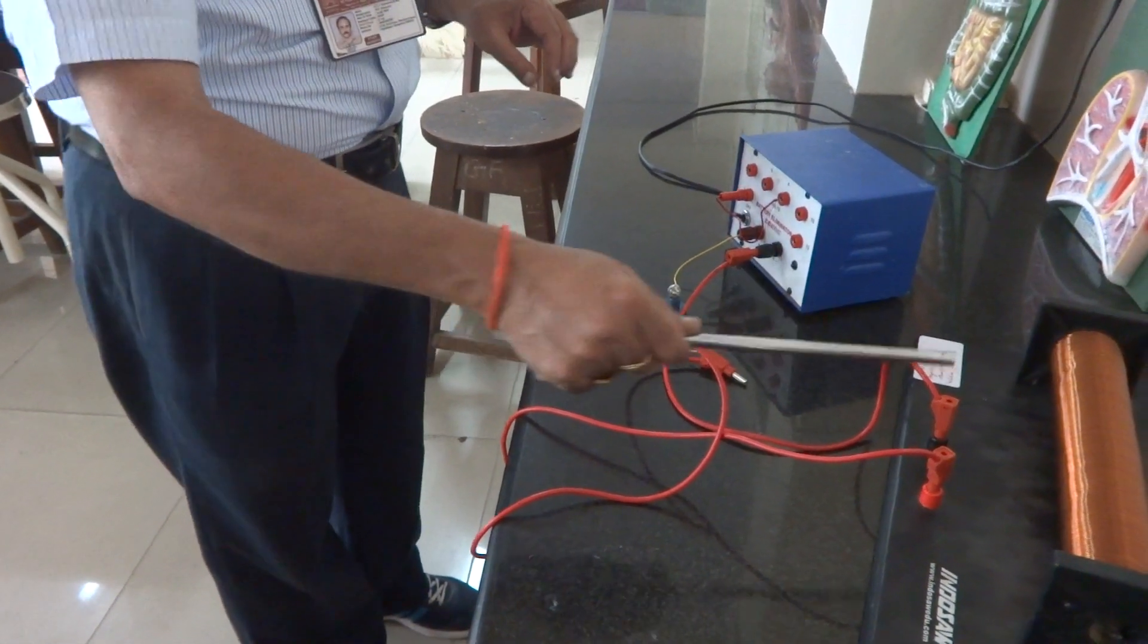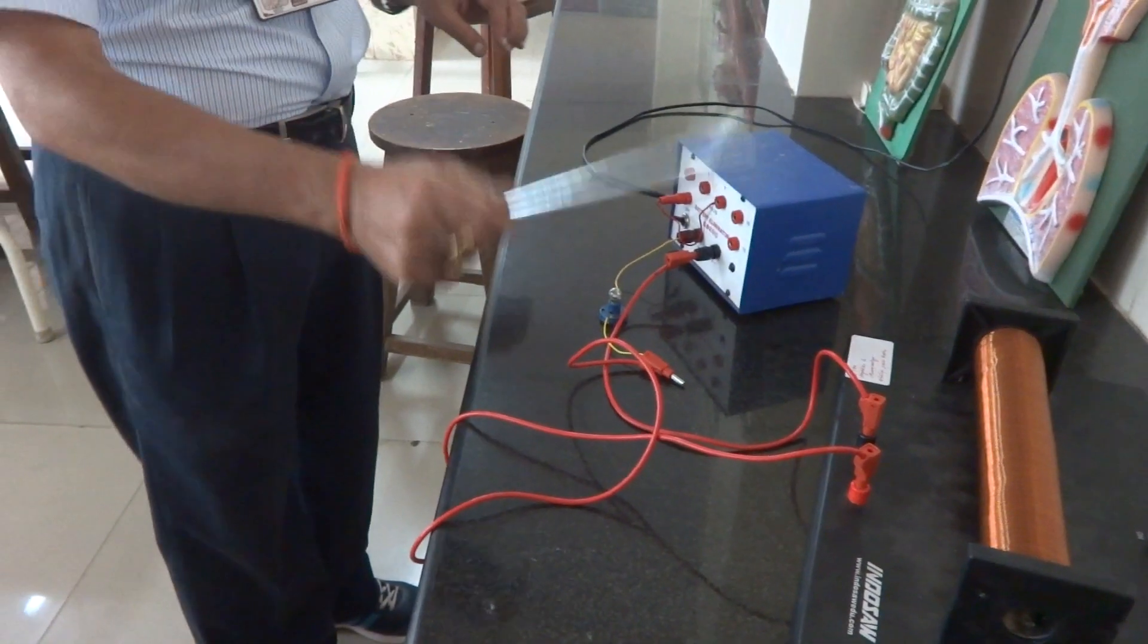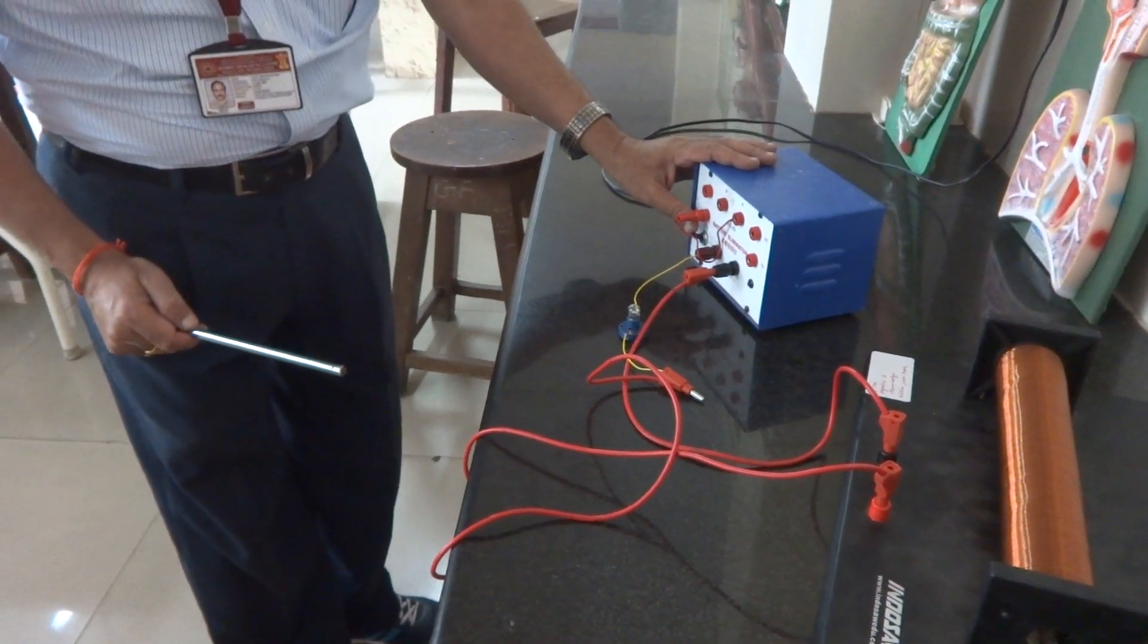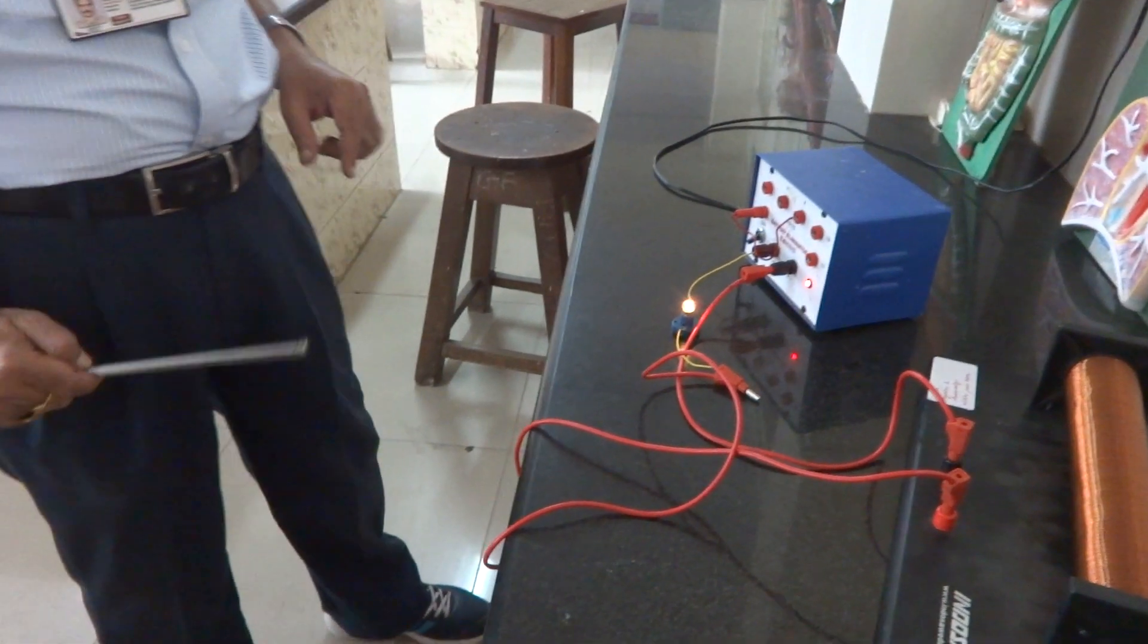The resistance is connected in series with the inductor. Now what I would like to show you, you can see the brightness of the bulb now.